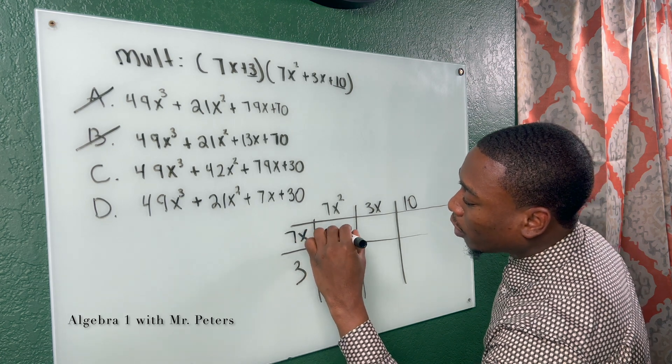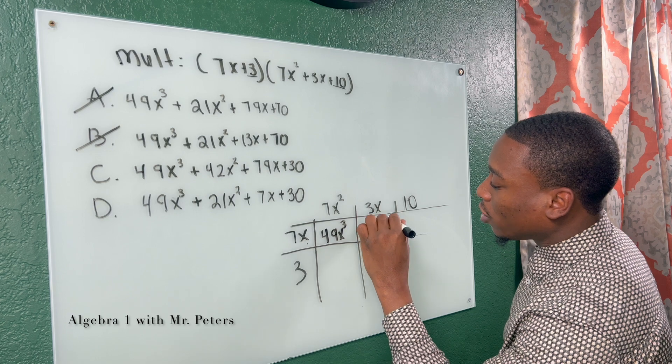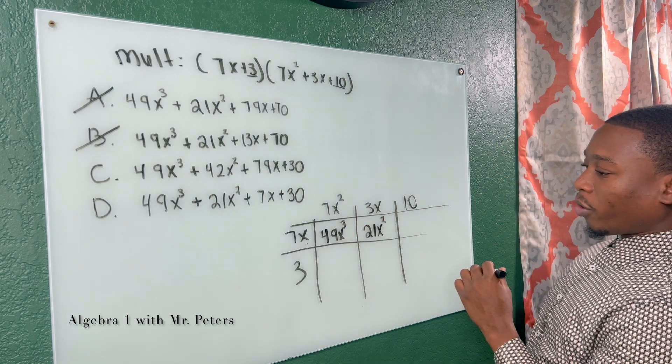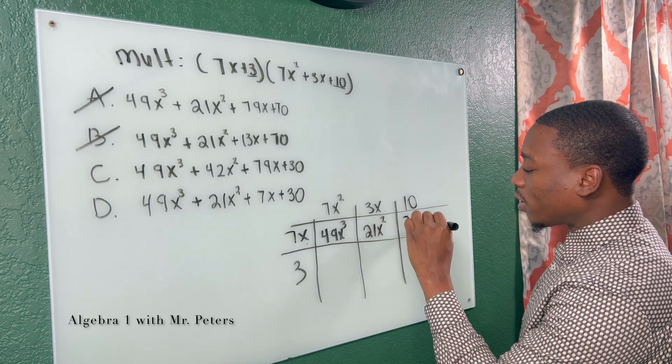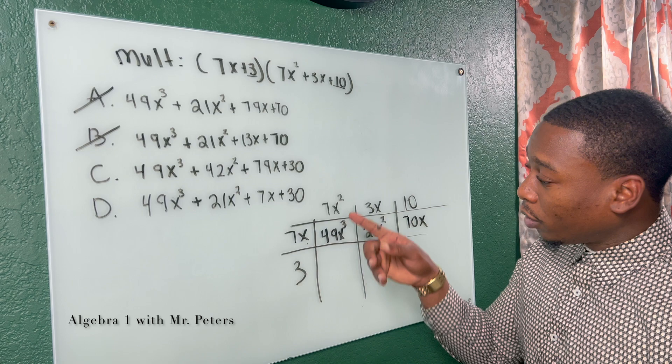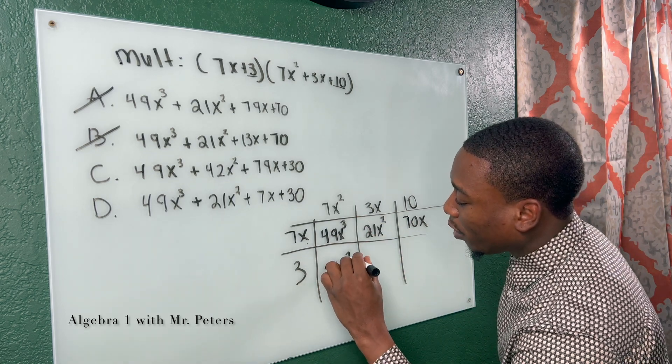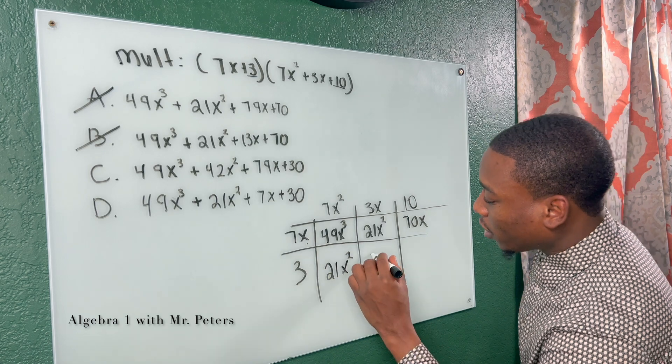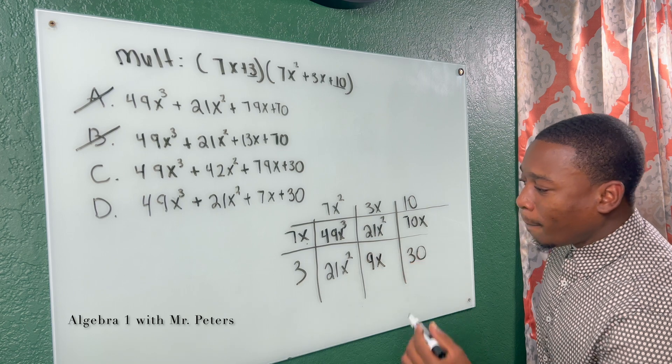So I'm going to multiply 7x times all three of these terms. I'm going to get 49x³, 21x², and then here, I'm going to get 7x times 10, which gives me 70x. Now I go back, I do the same thing with 3. 3 times 7x² is going to give me 21x². 3 times 3x gives me 9x. And then 3 times 10 is going to give me 30.